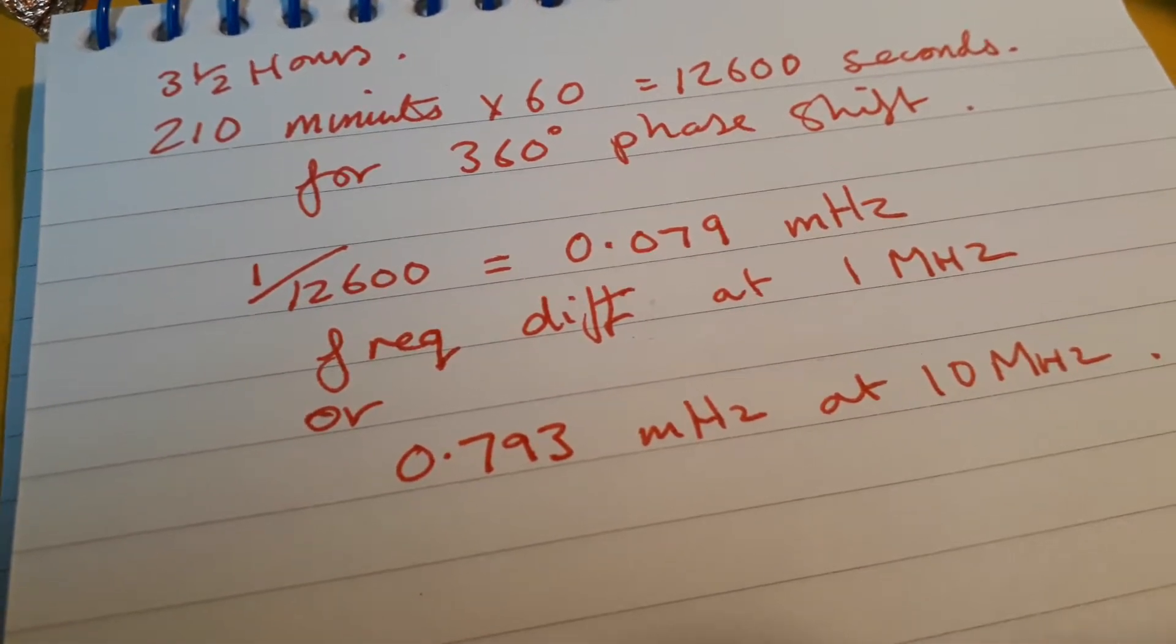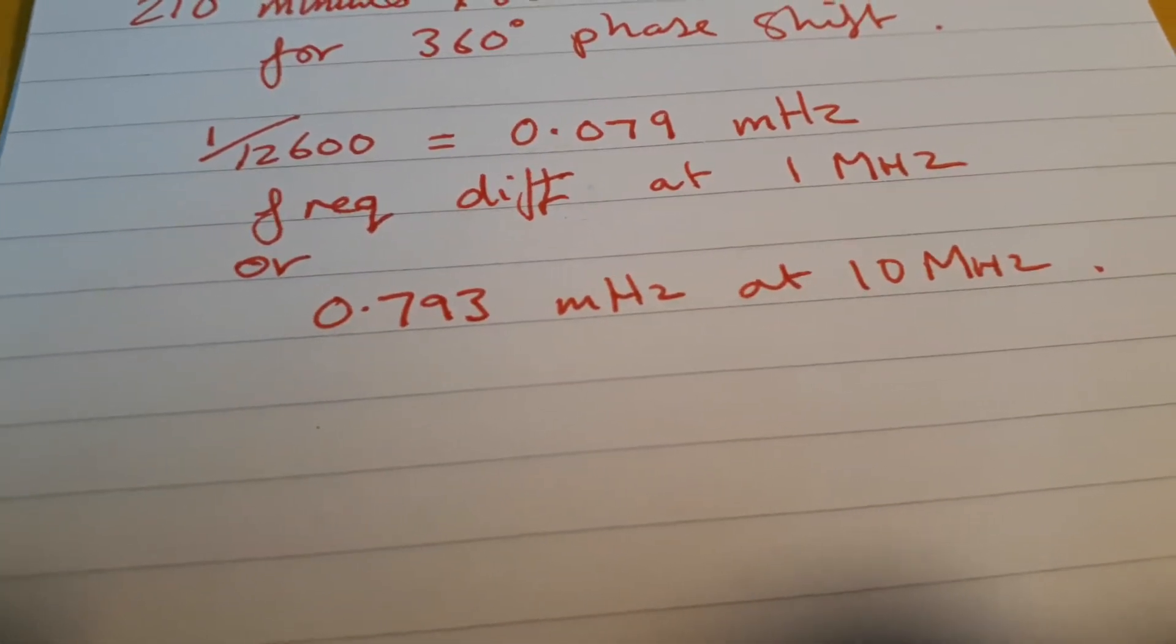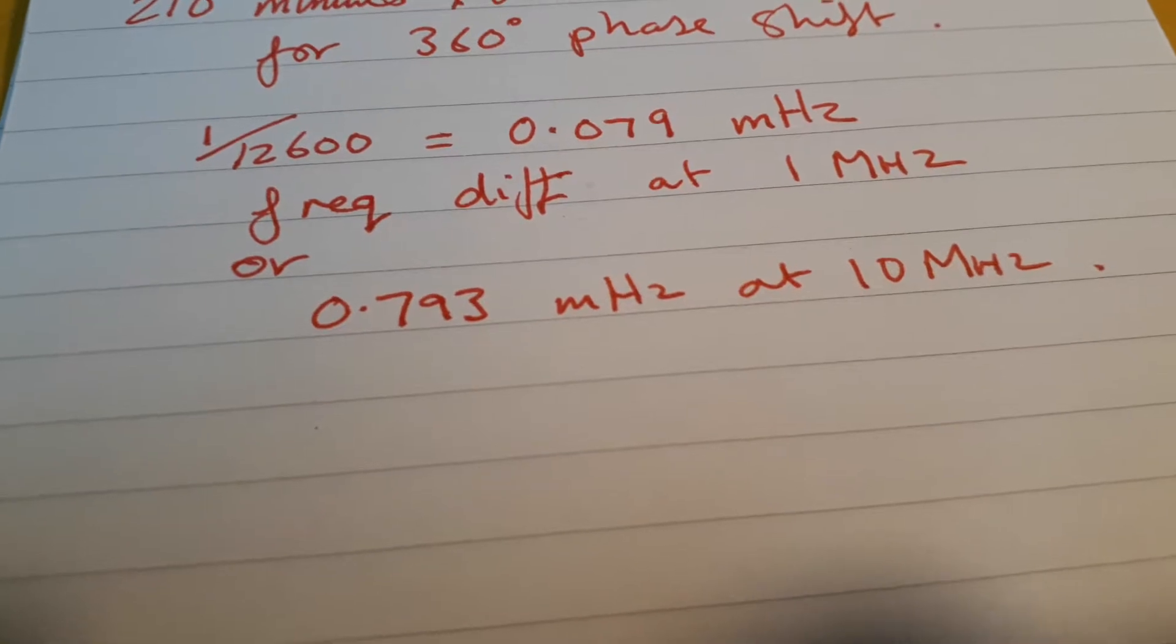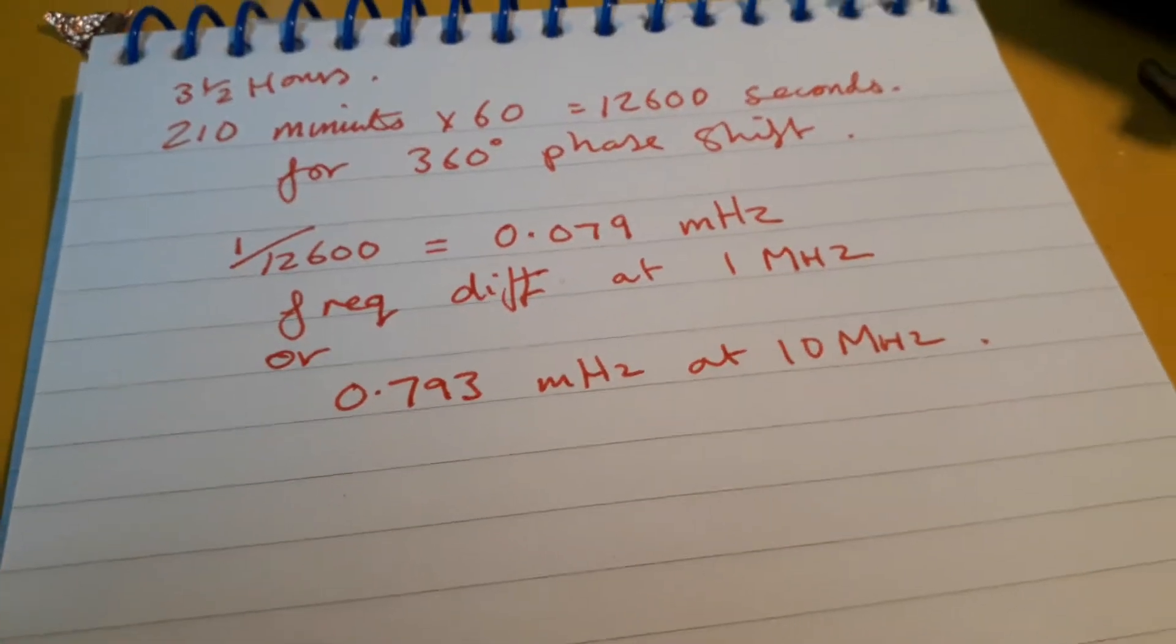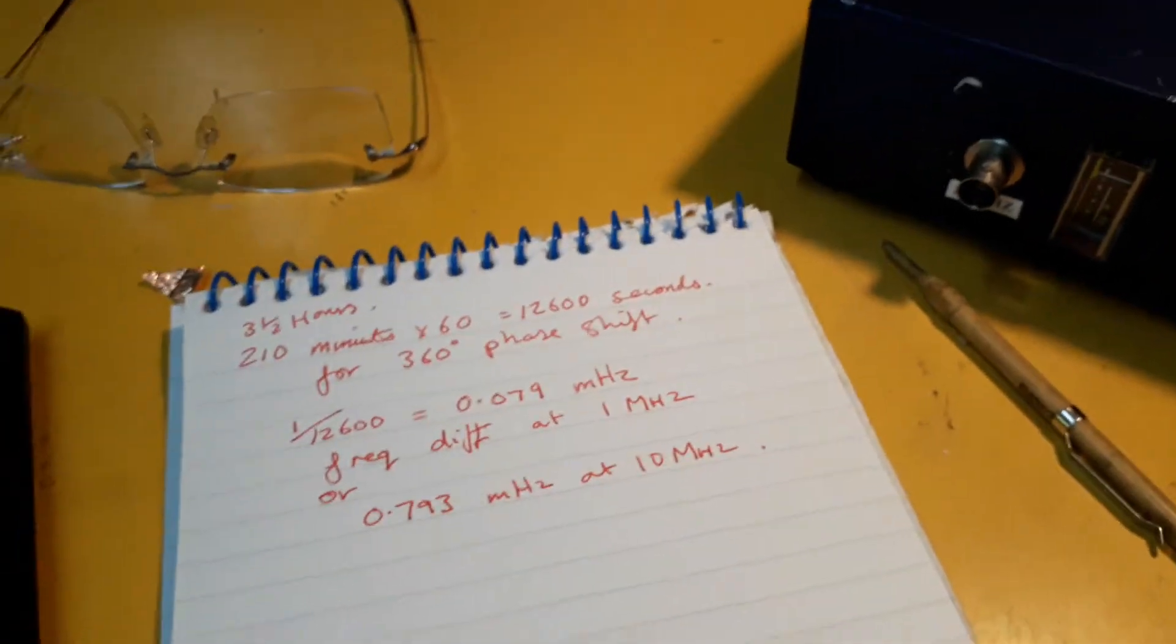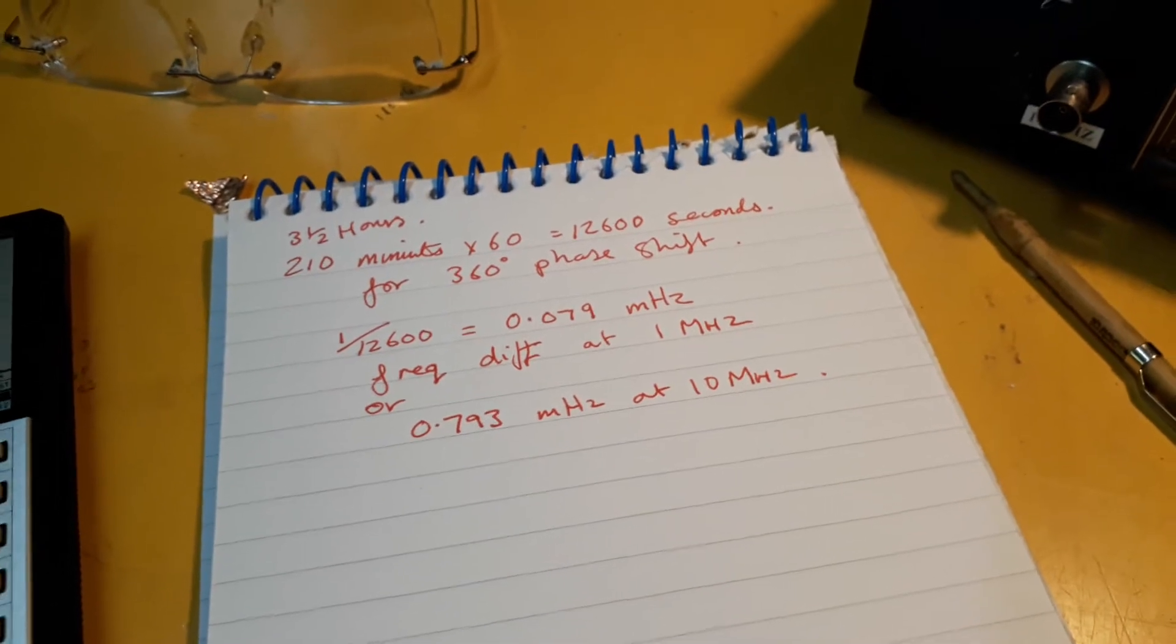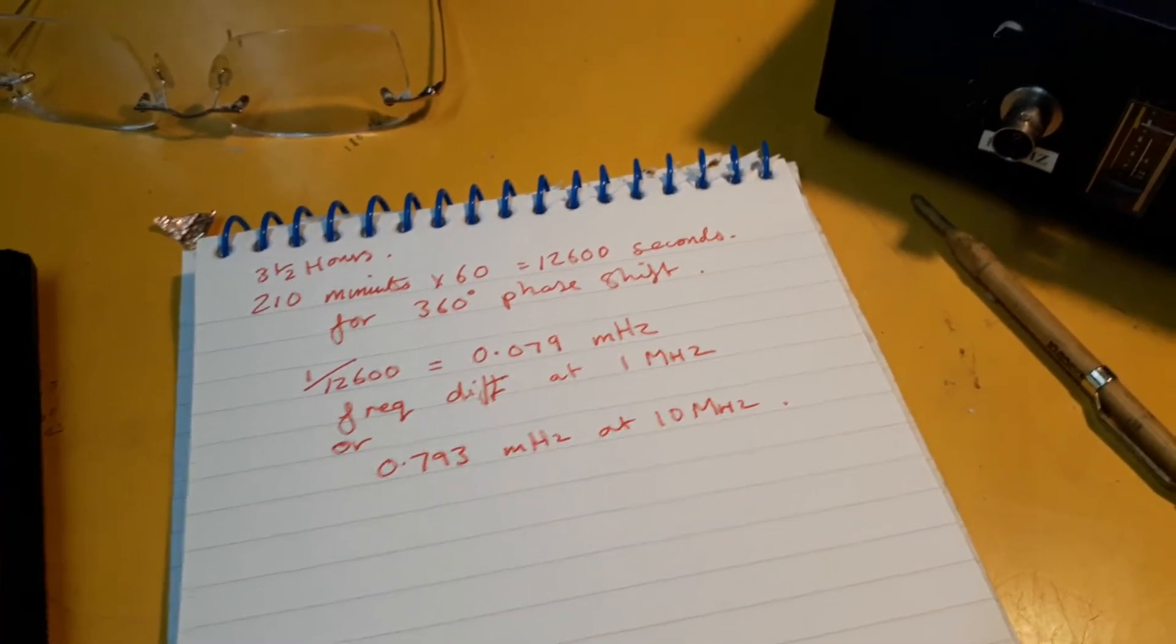So at 10MHz, it would be 0.793 millihertz difference, which is interesting, but I'm not sure which is more accurate, the Radio 4 frequency or the GPSDO. I don't know, but interesting all the same.